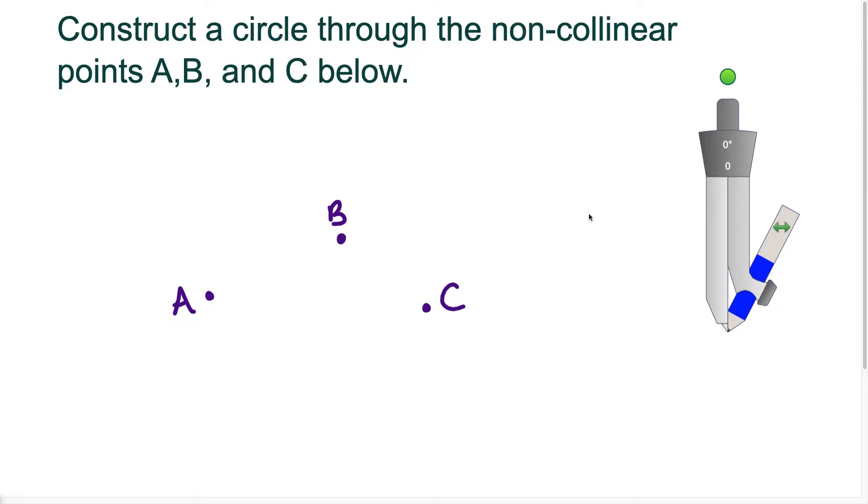What's up, I'm Vin and today I want to show how to construct a circle through three non-collinear points. Now non-collinear points just mean that the three points are not on the same line.